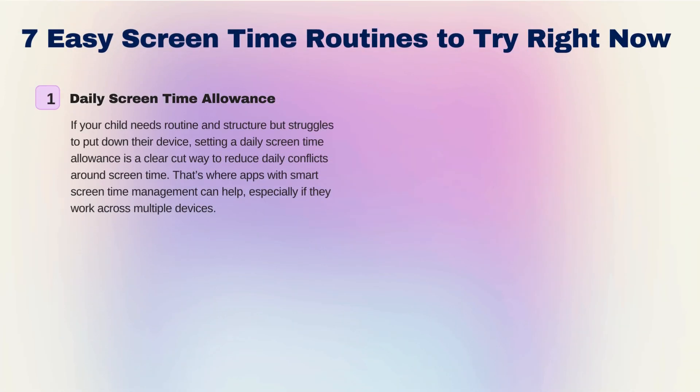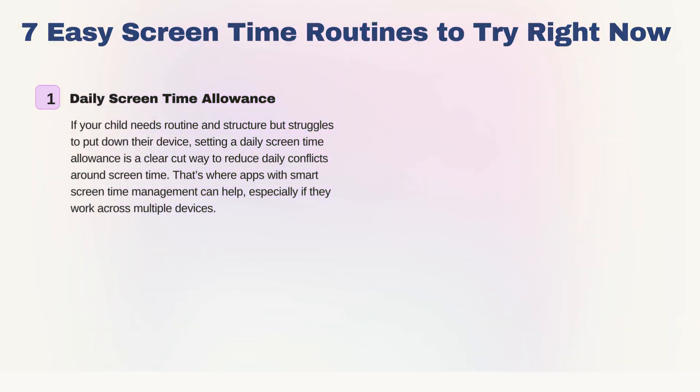There are seven easy screen time routines you can try out. You need not try all of them — pick what you think is suitable for you and your child. The first is a daily screen time allowance, which will reduce conflict with your child and can work hand-in-hand with the parental control apps introduced earlier.